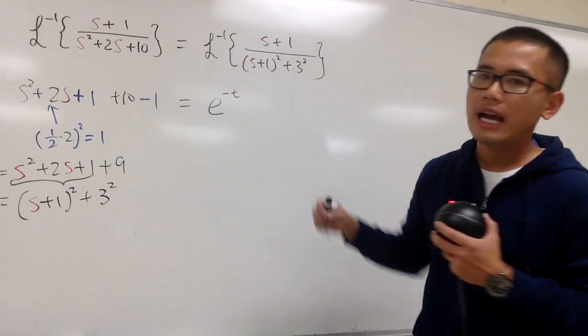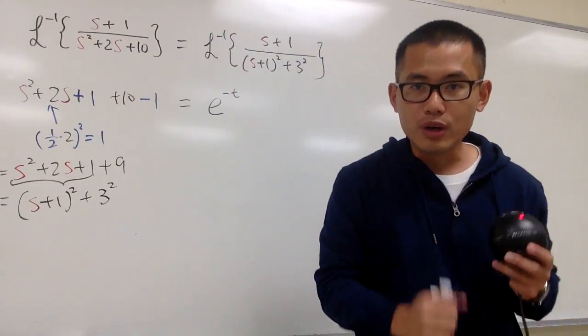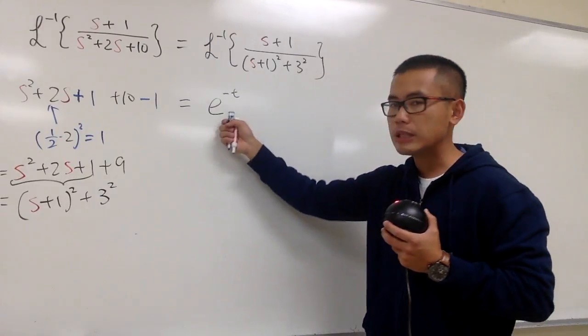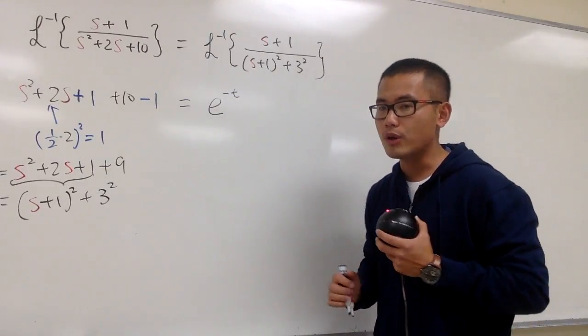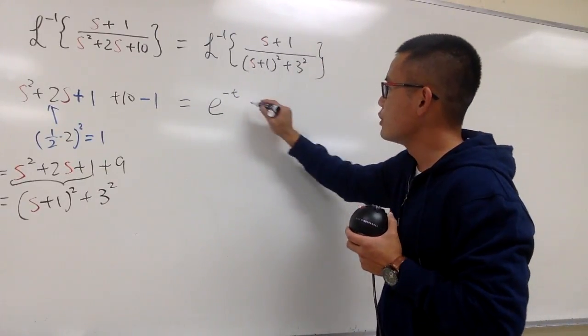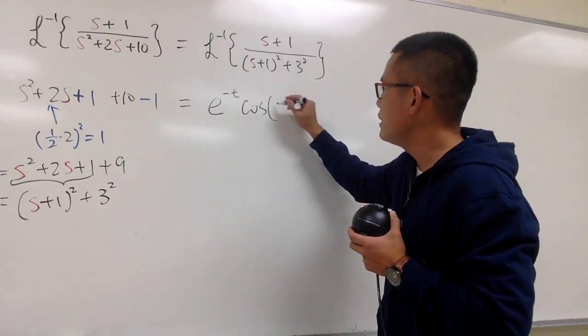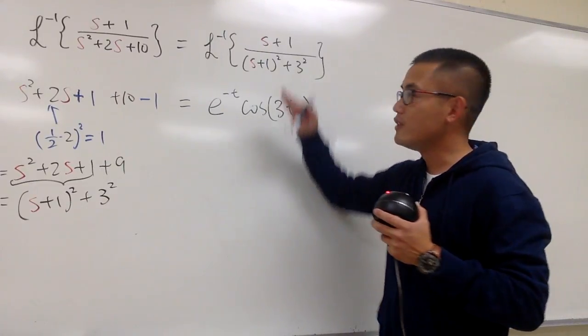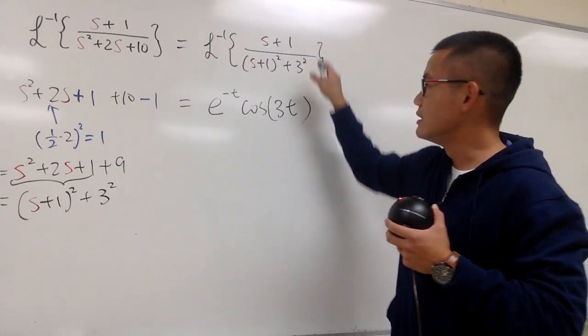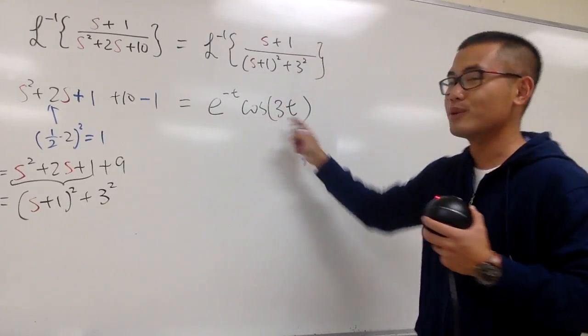Because this expression has been translated in the s world. So we must multiply by e to the negative t in the t world. And then, this is going to be cosine of 3t. And do not need to divide any number, because this is just all we need for the cosine.